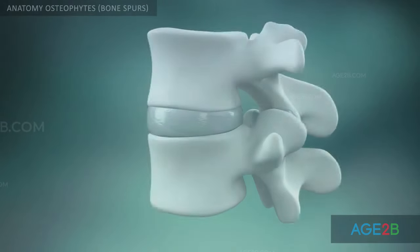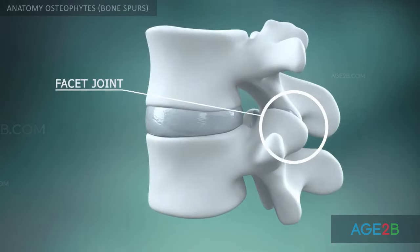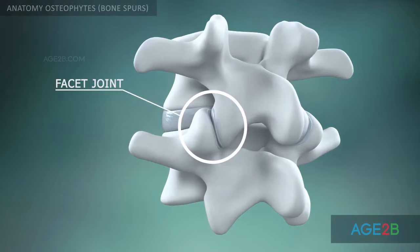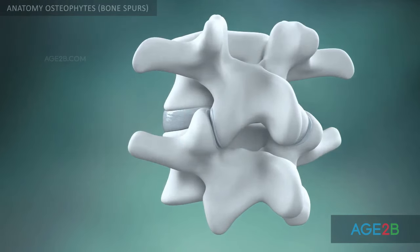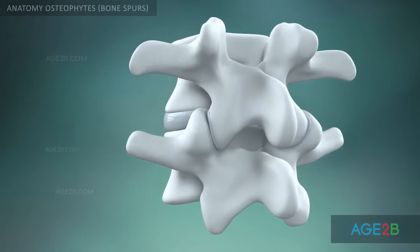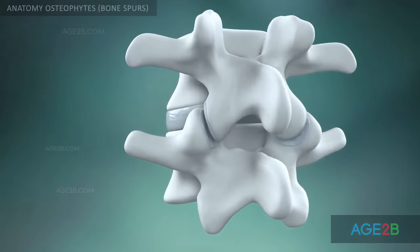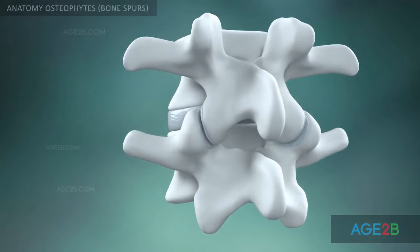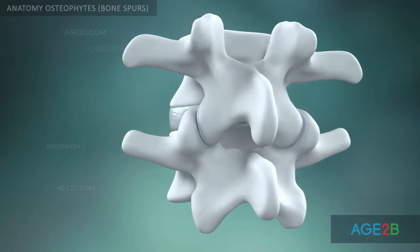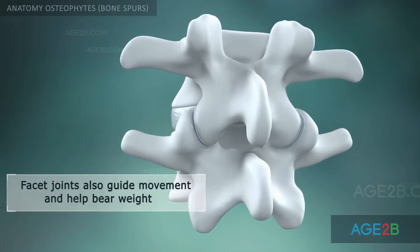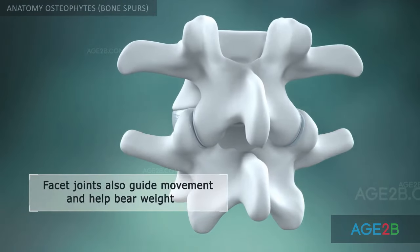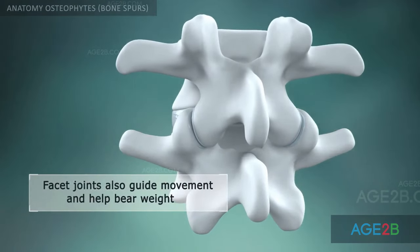Facet joints are located between each pair of vertebrae. They guide and limit the movement of the spine, providing stability and bearing a share of the load on the spine.